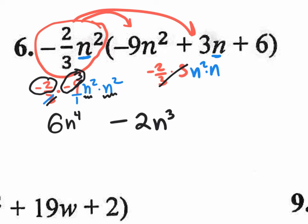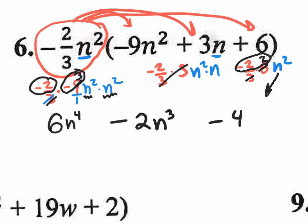Now for the final term, negative 2 thirds n squared times that 6. Let's put the coefficient times that number 6. So let's write it out, negative 2 thirds times 6. The 6 and the 3 cancel out. You have a 2 left over. And when you multiply negative 2 times 2, that'll give you a negative 4. And of course the n squared is still there.